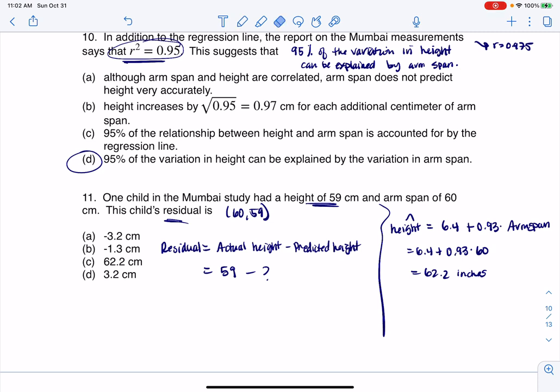Oh my gosh, sorry. This problem, we're not doing height in inches. We're doing height in centimeters. Sorry, we're on the metric system. So what I'm going to do is I'm going to take that 62.2, put it here, and when I subtract those two numbers, I get negative 3.2, and then the units are centimeters, and there's my residual.